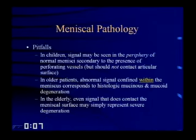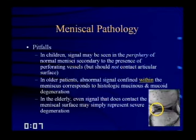Some pitfalls: in children, you can normally see signal in the periphery of the meniscus due to perforating vessels, but it should not contact the articular surface. In older patients, abnormal signal confined within the meniscus corresponds histologically to mucoid or mucinous degeneration. In the elderly, even signal that contacts the meniscal surface may represent severe degeneration, especially if it appears globular.